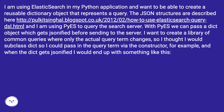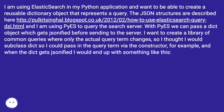I want to create a library of common queries where only the actual query term changes, so I thought I would subclass dict so I could pass in the query term via the constructor. When the dict gets jsonified, I would end up with something like this.